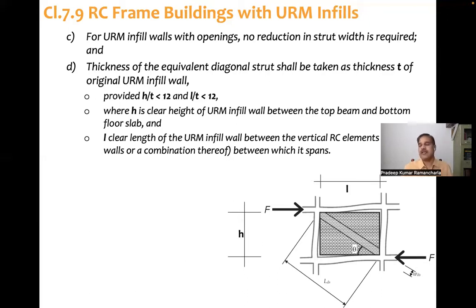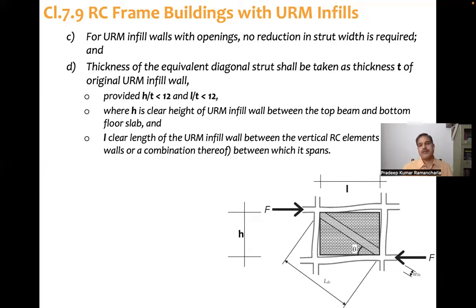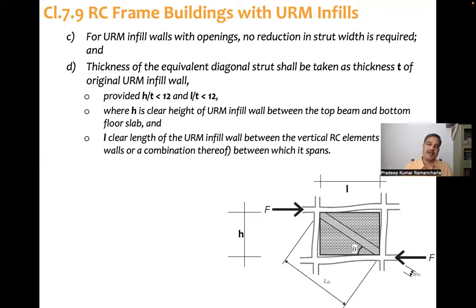In summary, four things are required to model infill walls: material property (modulus of elasticity, with an empirical expression given by code); geometry (length of diagonal strut, width of diagonal strut, and thickness); and end conditions (pin joints). Because of pin joints, only axial forces transfer, bending moments in frame members significantly decrease, and axial forces increase — truss action. Once the diagonal strut fails, the building reverts to bare frame behavior. Hence code requires designing for both bare frame and diagonal strut models, using whichever governs.